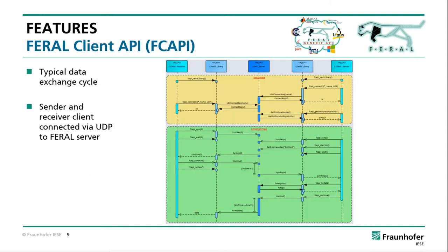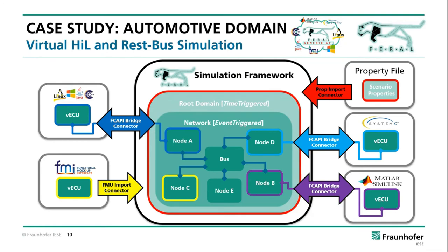This was done in order to develop new features for the next generation of vehicles. Here is one example of a data flow where different components exchange data — just to show how the tool works. Components were connected via UDP, and FERAL worked as the server and master component, synchronizing the traffic flow and connecting different components. This was one use case directly from industry, and it has direct industry impact — which is why it fits well in the VALUES project.